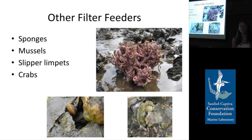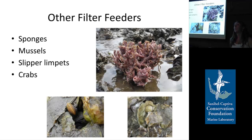Back to what oyster reefs are made of — they're not just oysters. There are lots of other creatures and a lot of other filter feeders: sponges, mussels, slipper limpets, and crabs. For my second project, I wanted to look at slipper limpets and Conrad's false mussels, which can both occur in oyster reefs, in a laboratory setting to see what their filtration rates are and what environmental factors might influence those rates.